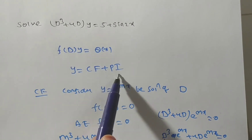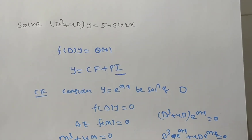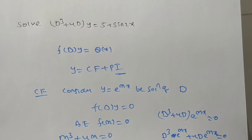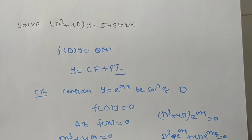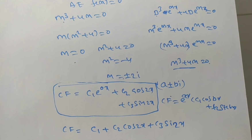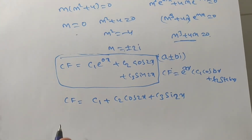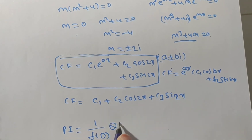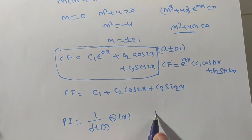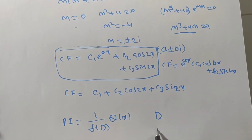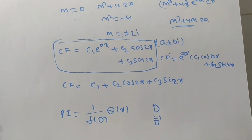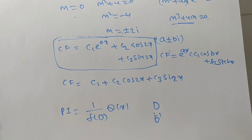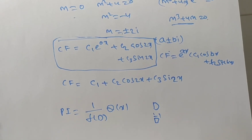Remember: while finding the particular integral, even though it is called an integral, we won't write the constant of integration. The particular integral (PI) is 1/f(D) · Q(x), where D⁻¹ denotes the inverse differential operator, which is integration.